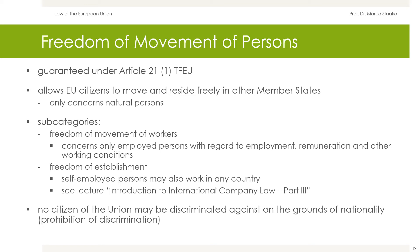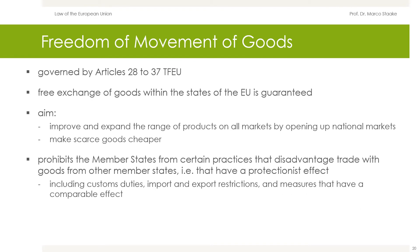No citizens of the Union may be discriminated against on the grounds of nationality — that is the prohibition of discrimination. The free exchange of goods within the states of the European Union is guaranteed within the framework of the freedom of movement of goods. The aim is to improve and expand the range of products on markets by opening up national markets. To this end, it prohibits member states from certain practices that disadvantage trade with goods from other member states — practices that have protectionist effects — including customs duties, import and export restrictions, and measures having a comparable effect. The freedom of movement of goods is regulated by Articles 28 to 37 TFEU.